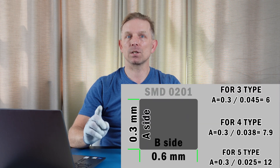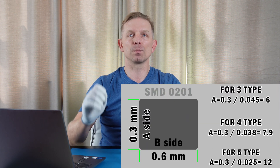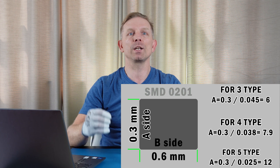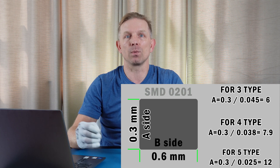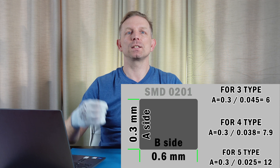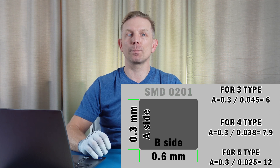The second method is calculation based on aperture size. Ask your designer for the smallest aperture width in the stencil, then divide by the average ball size. The table shows different solder paste types and how many balls fit across the width of the pad. Both methods can work, but more balls across the aperture equals better paste release.